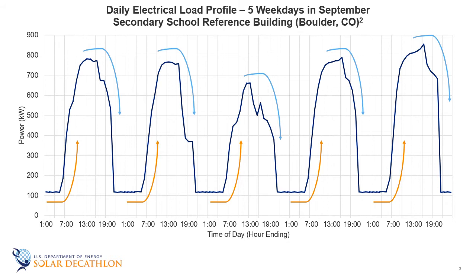As the sun rises and the day begins, homes and businesses start to use electricity by turning on lights, making coffee, turning on computers, and so on. As the day goes on, electricity use peaks usually in the afternoon, especially when air conditioning is needed. And then it tails off for the evening as the various demands for electricity diminish.